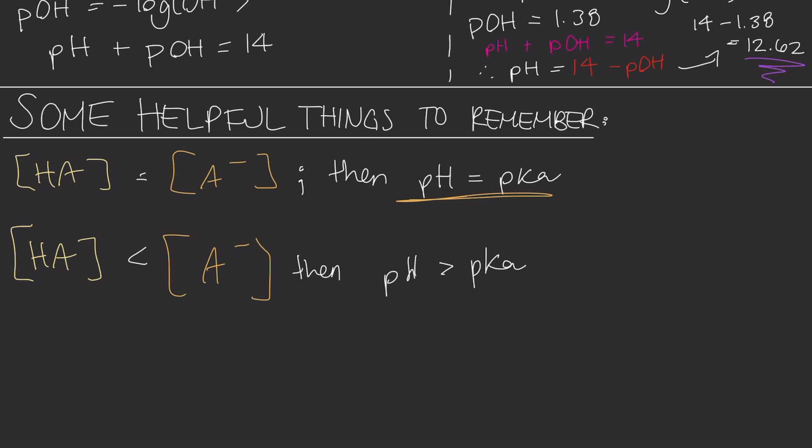The excess of A-minus decreases the concentration of hydrogen ions, leading to a higher pH. Conversely, when the concentration of the acidic form, or HA, is higher than that of its conjugate base, or A-, it means the system is shifted towards the acidic side.